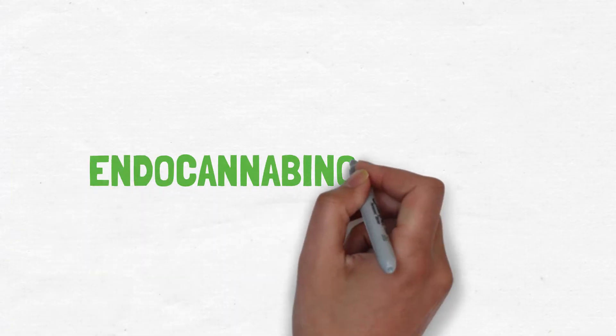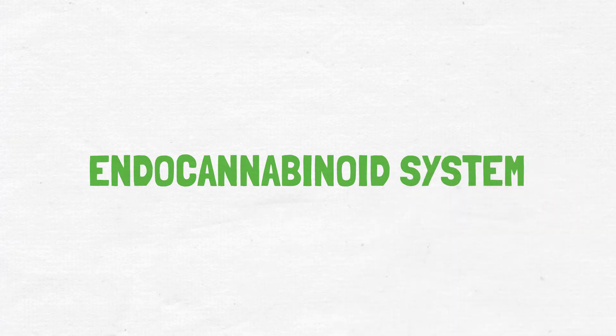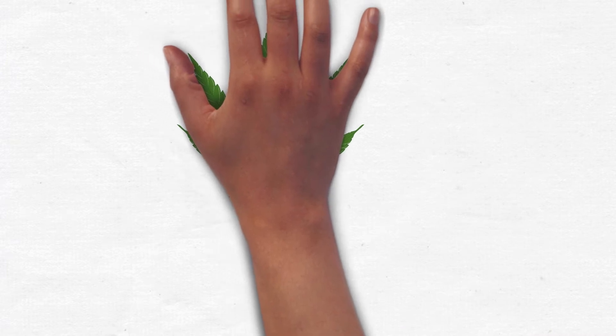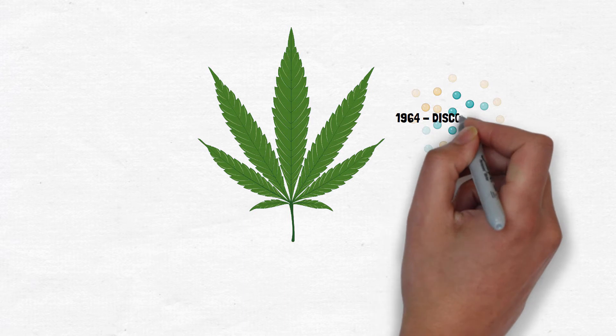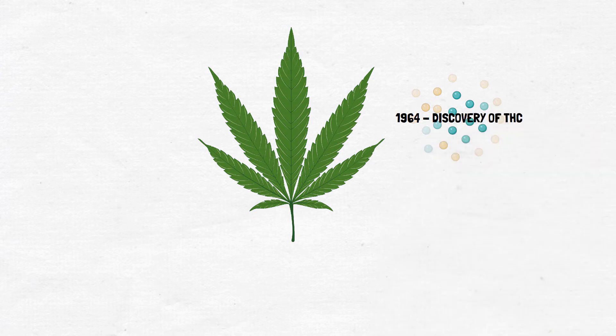The endocannabinoid system. The use of cannabis as a medicine dates back to 5000 years ago. 50 years ago in 1964, the psychoactive ingredient of cannabis sativa, THC, was isolated, opening the road to the discovery of an entire system previously unknown: the endocannabinoid system.